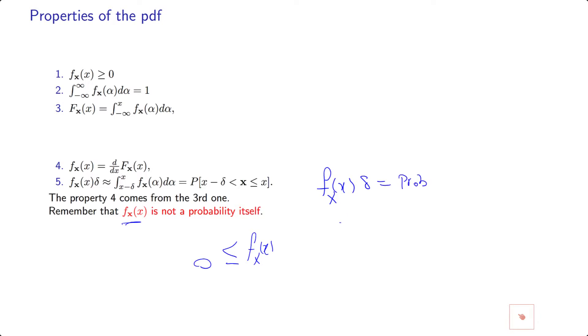Therefore, f_X of x is equal to probability that x is smaller than x and bigger than x minus delta, divided by delta. Because this delta is a very small number, these can be big.